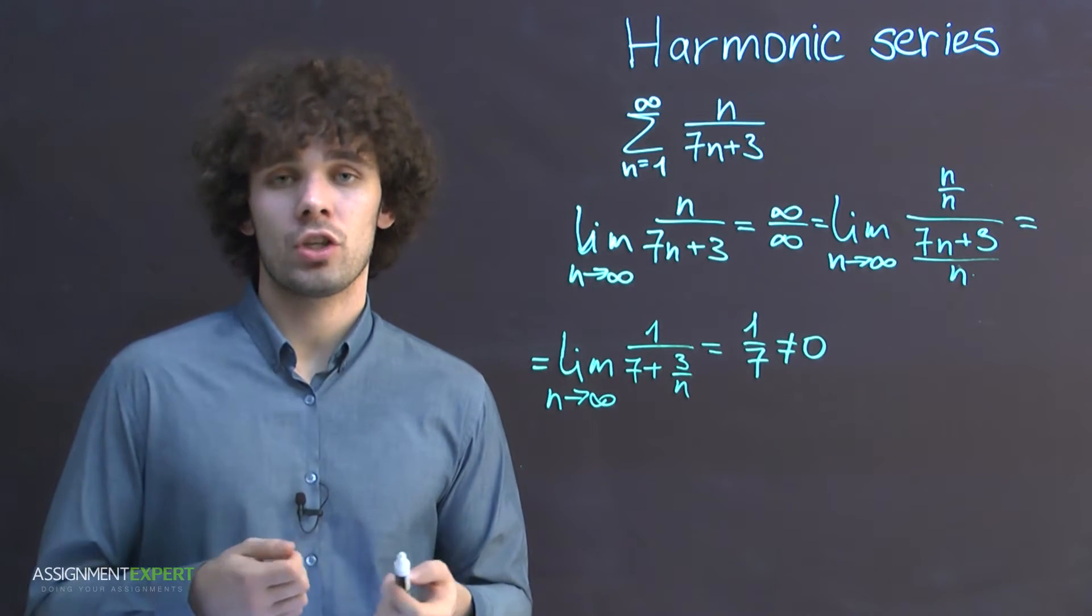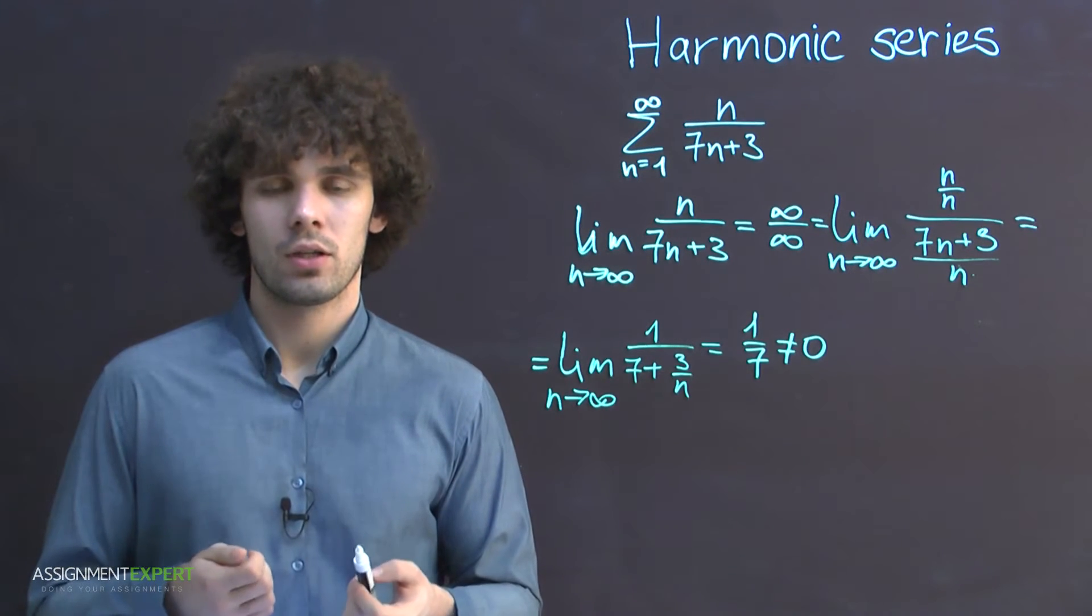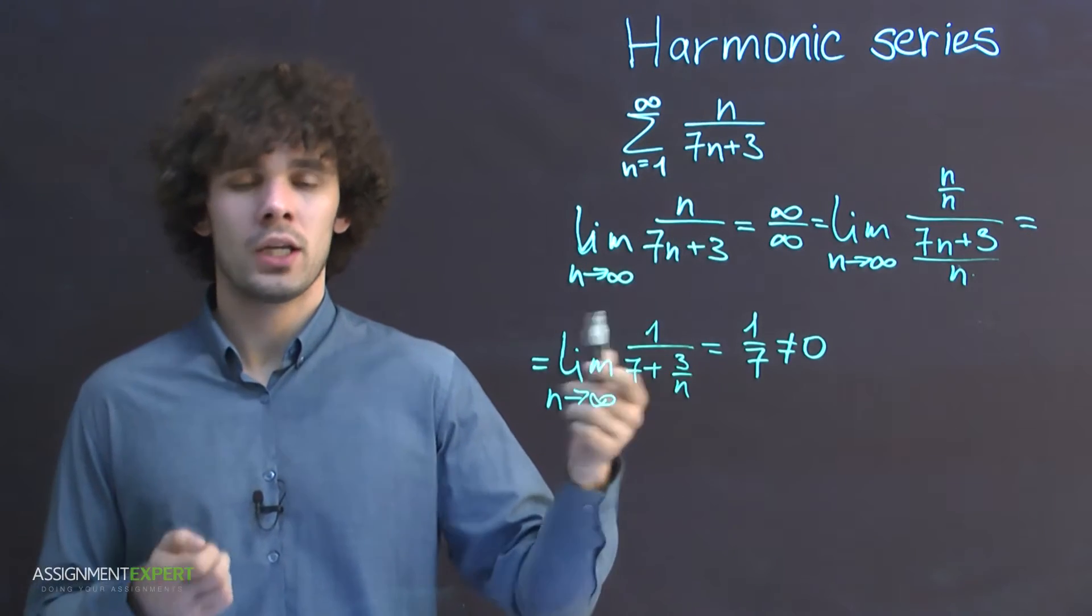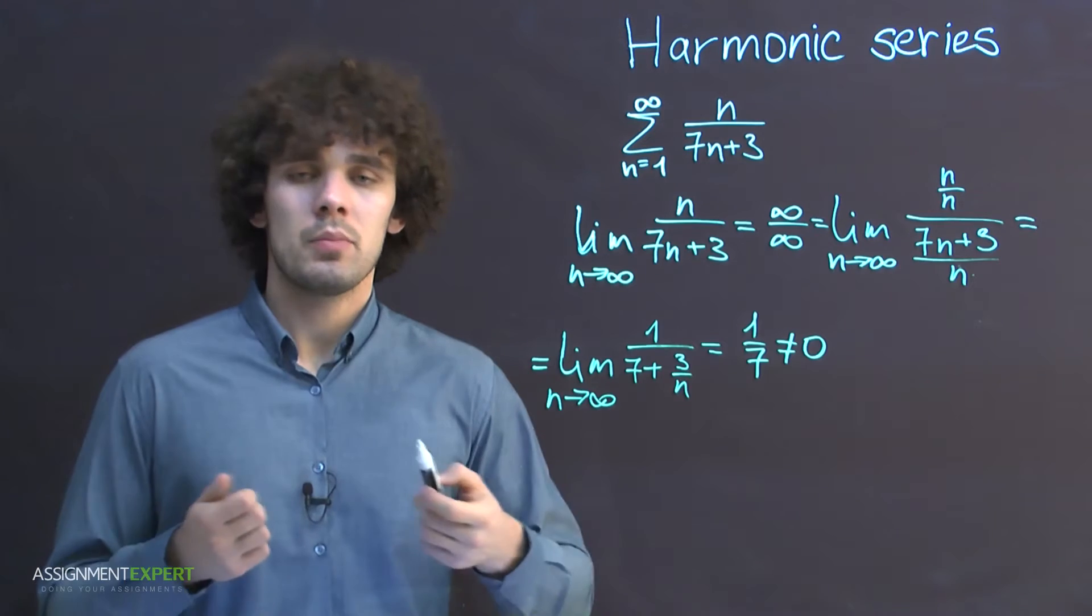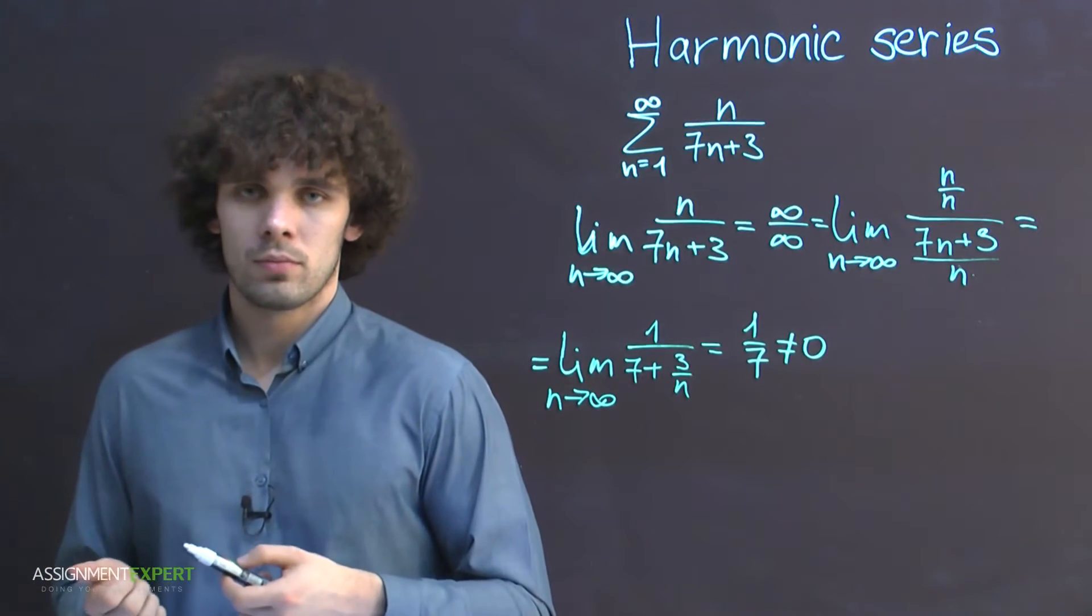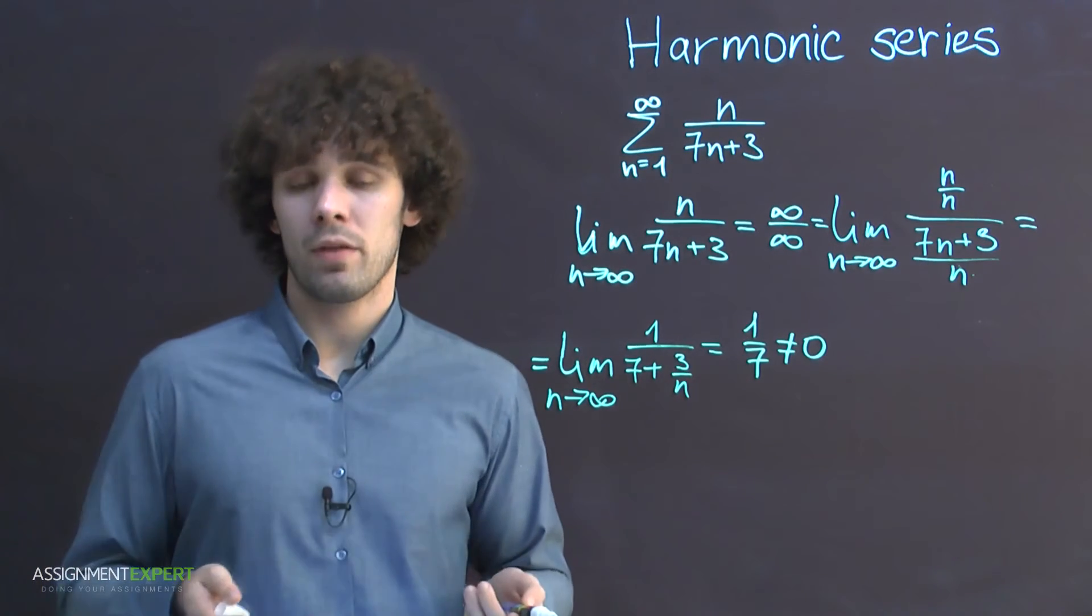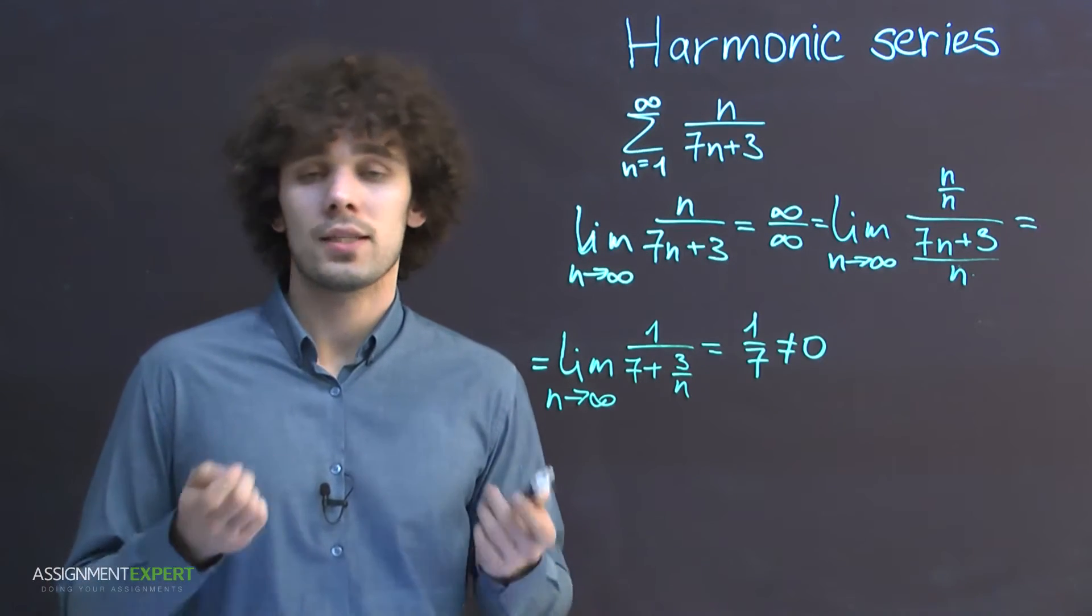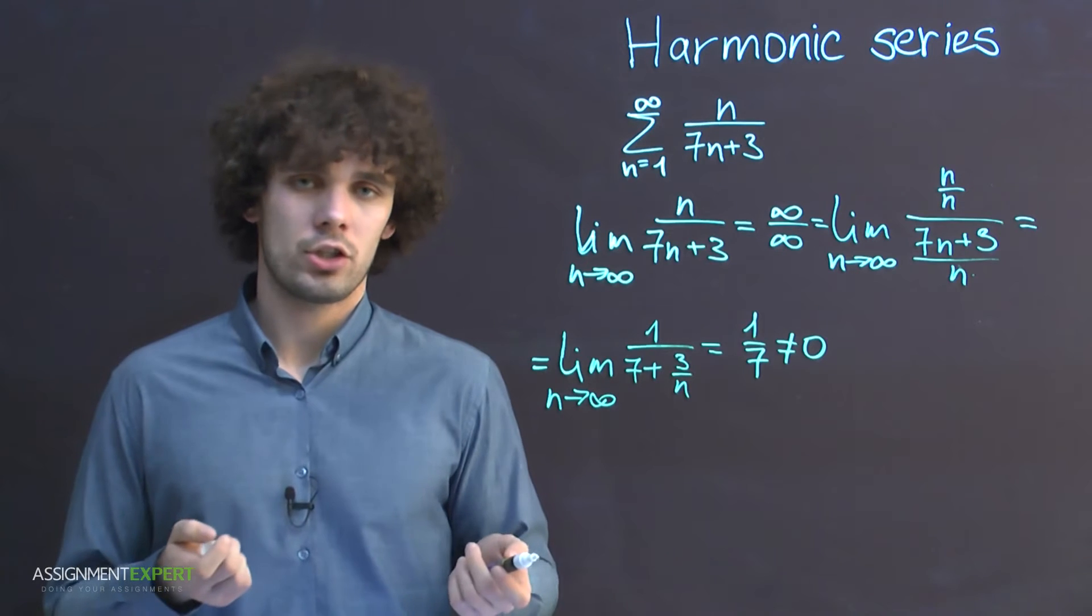Why do we call this condition the necessary condition? That's because if the limit of the general term of the series tends to 0, it doesn't mean that the series converges. It is still necessary, however, this is not enough. The series may converge or diverge as well. In such cases, we apply other conditions.